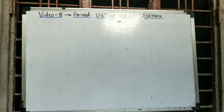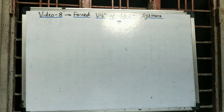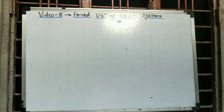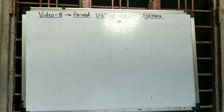Welcome to the eighth video of the series on forced vibration of single degree of freedom systems. From the first to the seventh video we completed harmonically excited undamped single degree of freedom spring-mass systems. In today's video, number eight, we are going to derive the equation of motion of a harmonically excited damped spring-mass system of one degree of freedom.